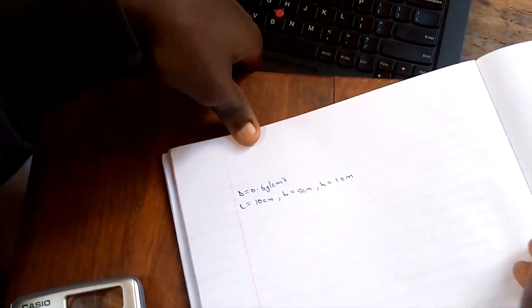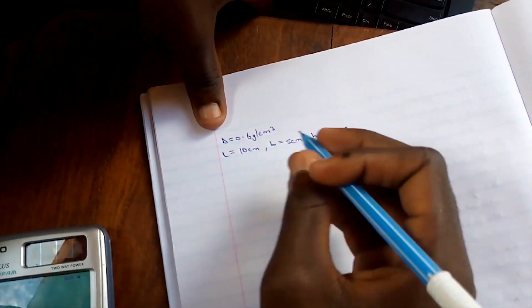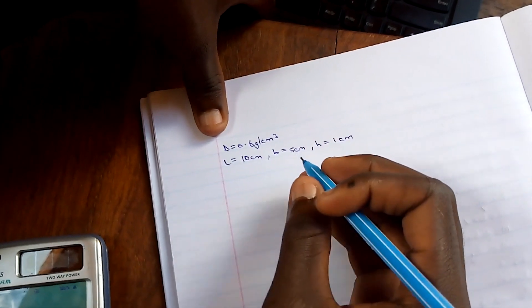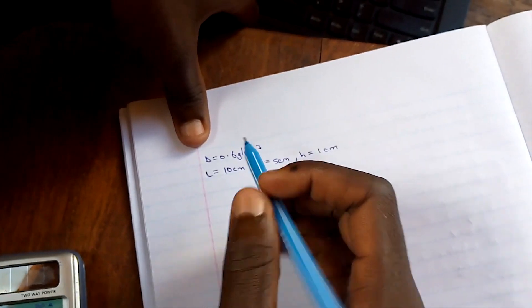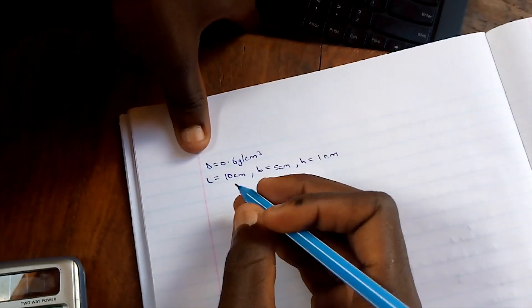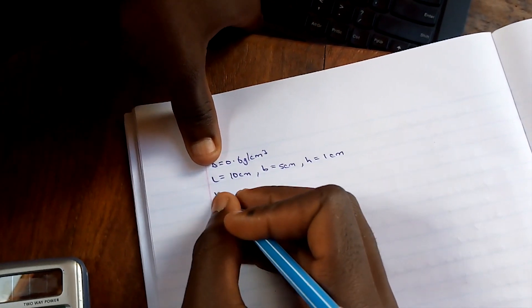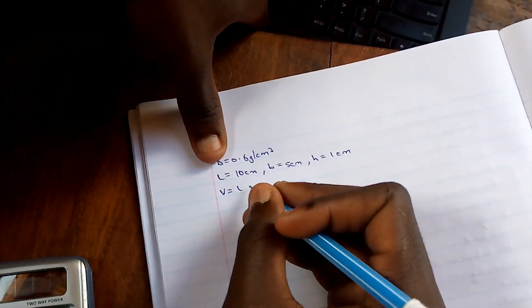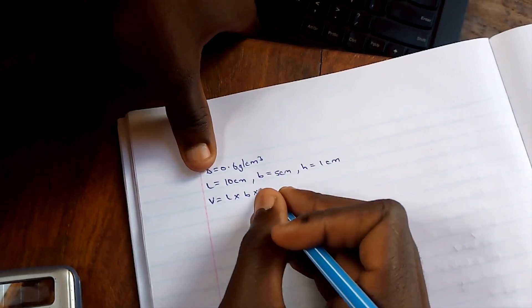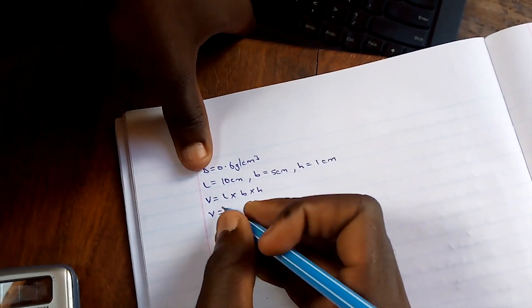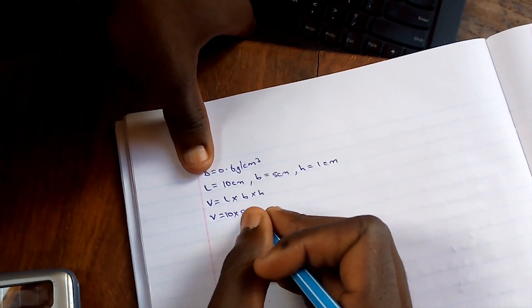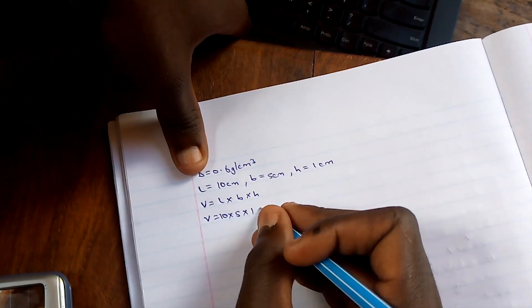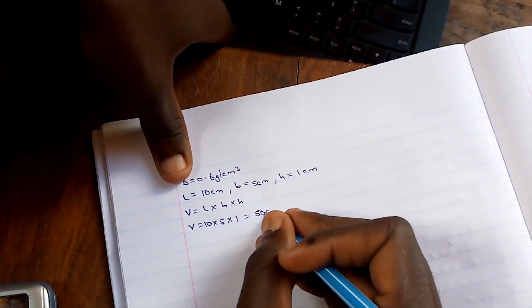So what is the mass of the block? In order to find the mass of the block, we are going to use the formula for density. Density is equal to mass over volume. So first of all, we need to find the volume. The volume is equal to length times breadth times height. So the volume will be 10 times 5 times 1, which will be equal to 50 cubic centimeters.